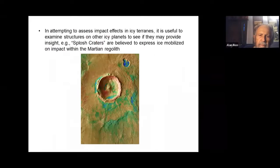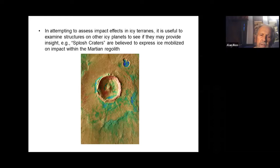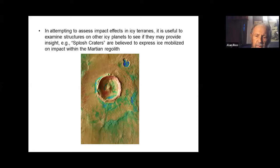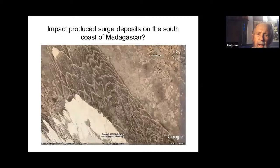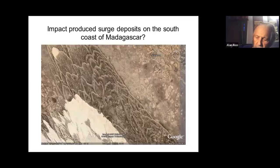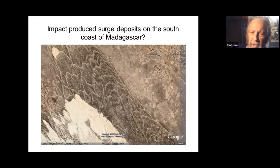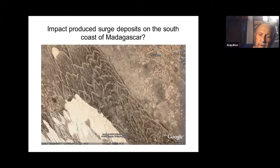In attempting to assess impact effects in icy terrains, it's useful to examine structures on other icy planets to see if they may provide insight. Splash craters are believed to express ice melted on impact within the Martian regolith. Here's a splash crater—you can see the splotch lines running out and the central peak that characterizes these craters, as well as the rims. Impact-produced surge deposits on the south coast of Madagascar, which is looking towards Antarctica, some similar stuff in New Zealand and in Australia as well.